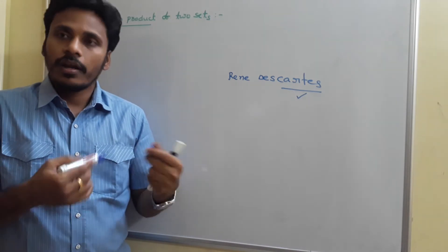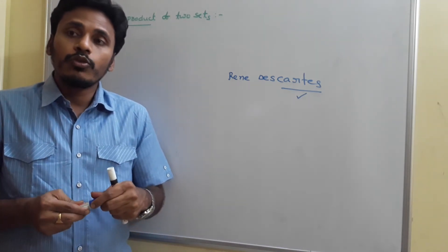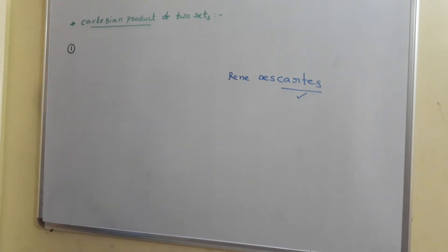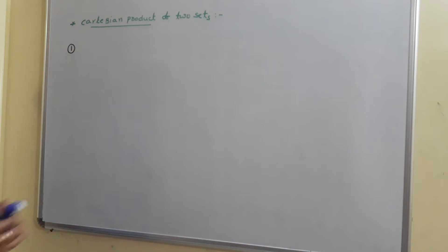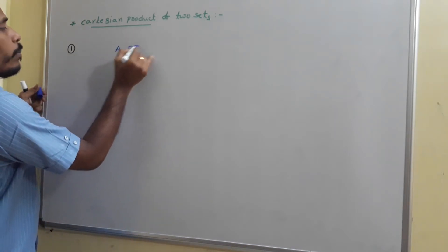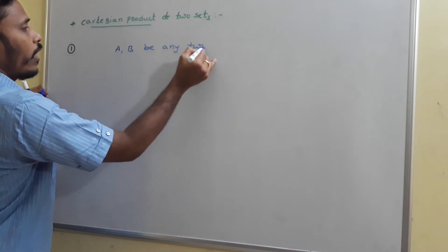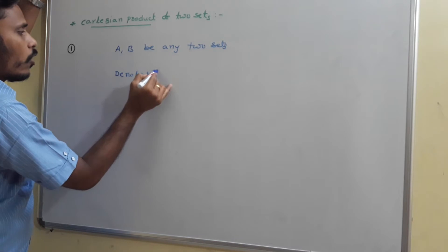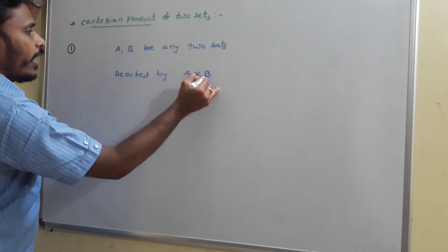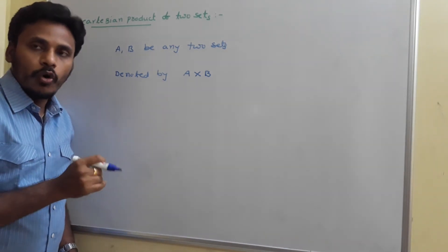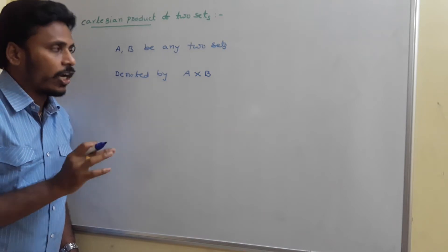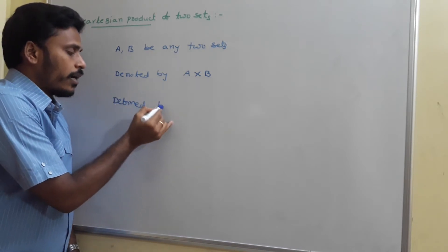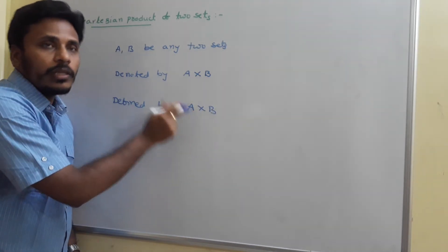We also use the concept of Cartesian product in the introduction to coordinate geometry. Now, how to define the Cartesian product of two sets: first, let A and B be any two sets. The Cartesian product of two sets is denoted by A cross B — read it as 'A cross B', not 'A times B' or 'A into B'. A cross B is defined as the set of ordered pairs.